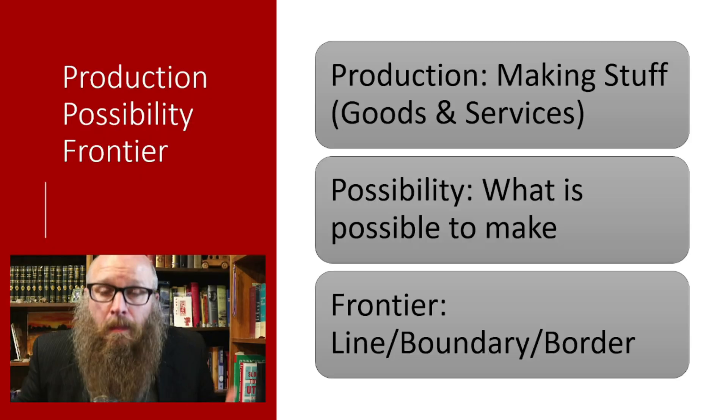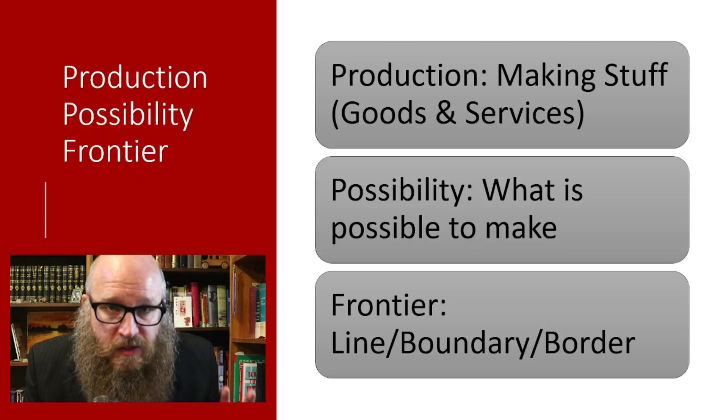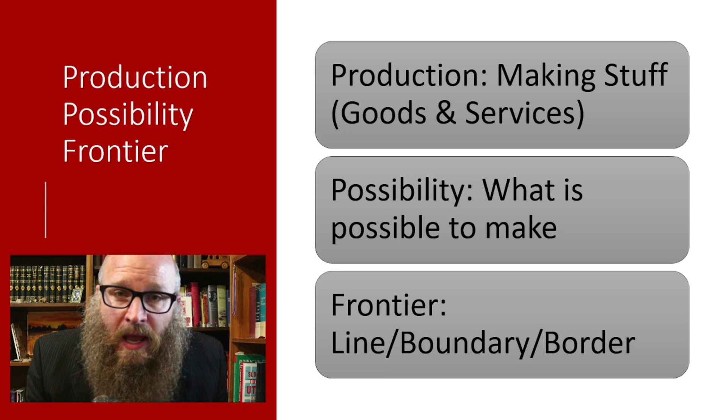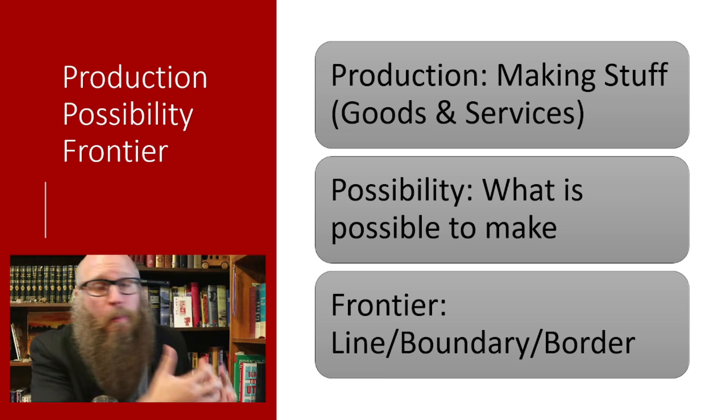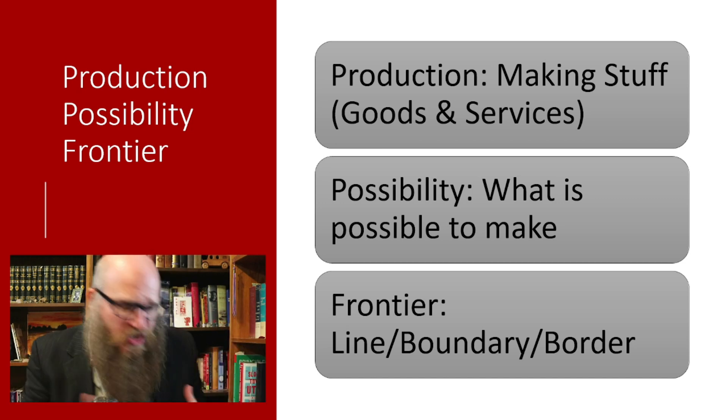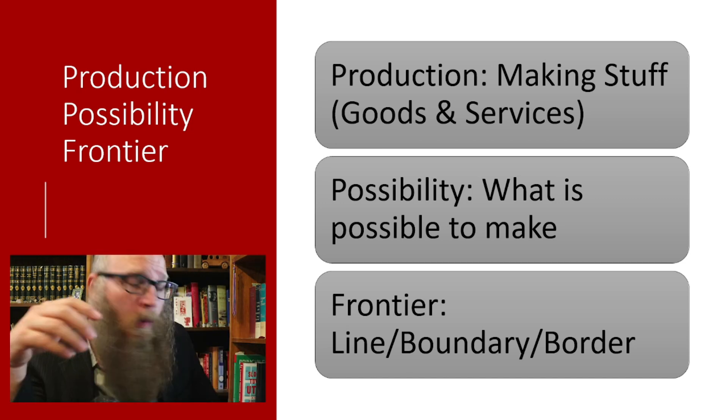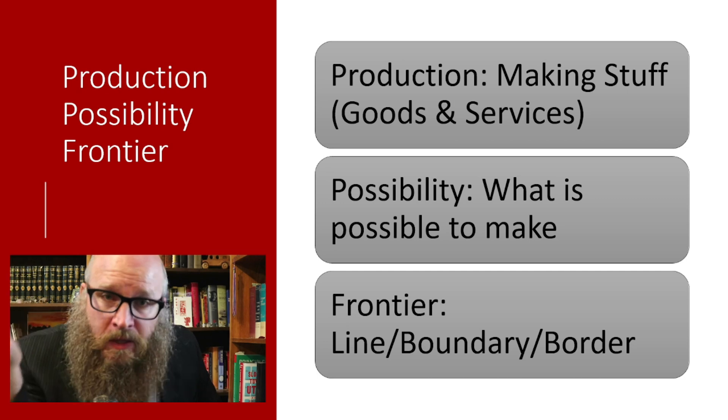The first model we're going to build together is going to help us answer big questions in the economy. How do we get long-run economic growth? Where does material prosperity come from? It helps us model this trade-off between doing one thing or doing another. We call it the production possibility frontier.